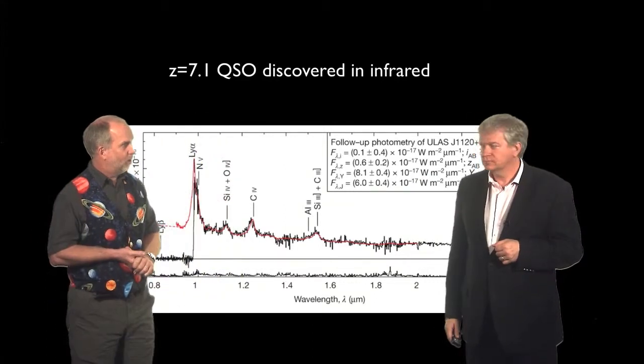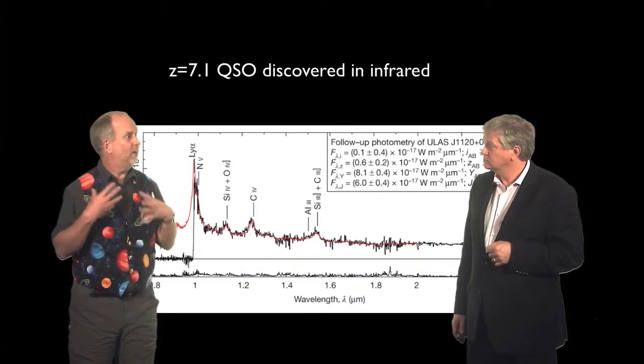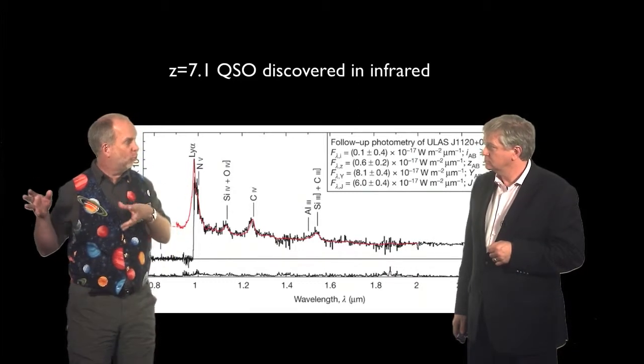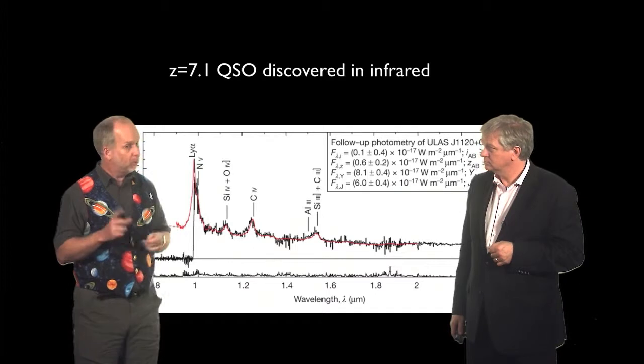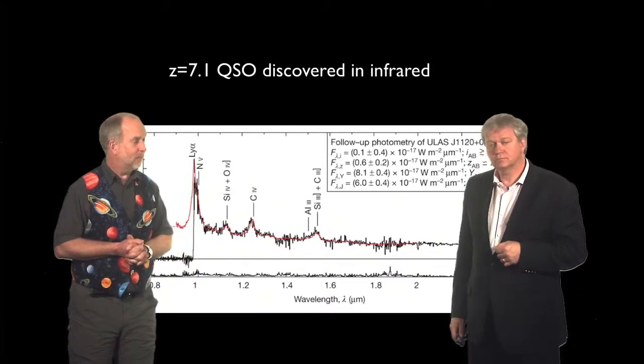And that seems to be when the era of reionization occurred. So it looks like it's all done and dusted. The universe started off very hot. At redshift about a thousand, it cooled down enough to become neutral. It stayed neutral all the way down to redshift about six, when something, but not quasars, put out enough ultraviolet to ionize it again. Nice and simple.